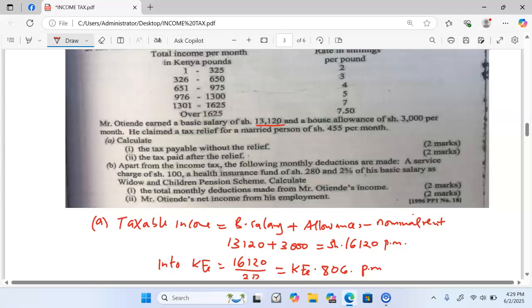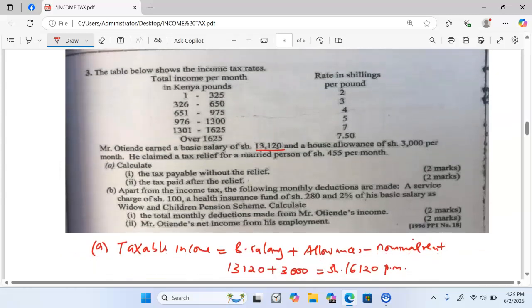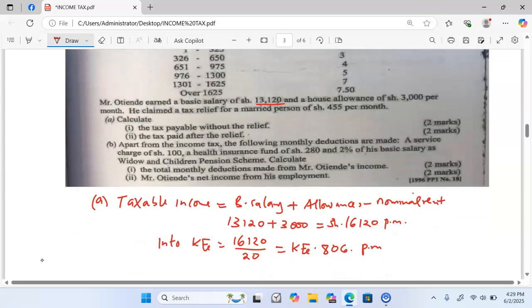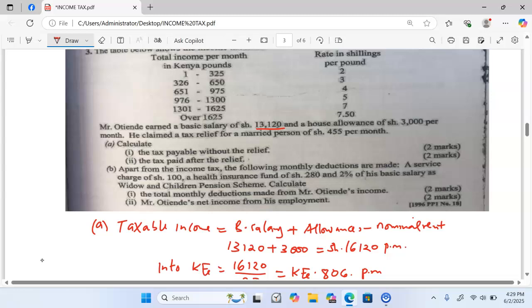Next, now we go and calculate the gross tax from the table. First, we need to check where our money lies. 806 lies in the third bracket.